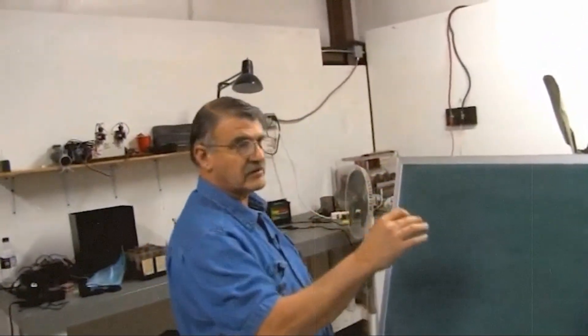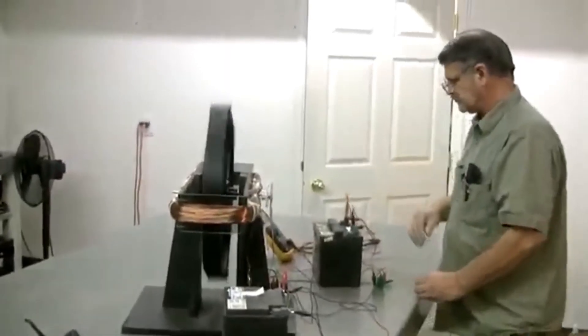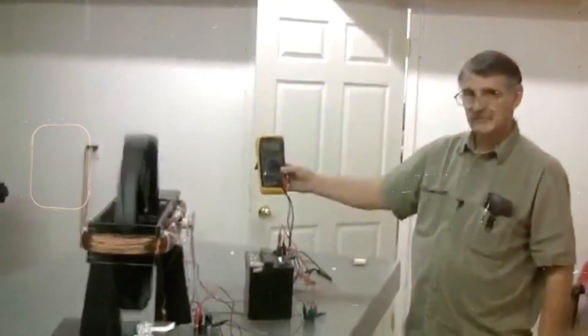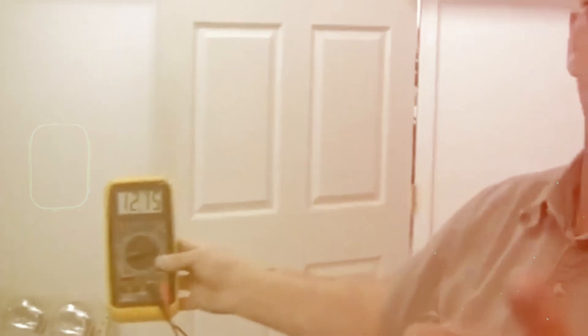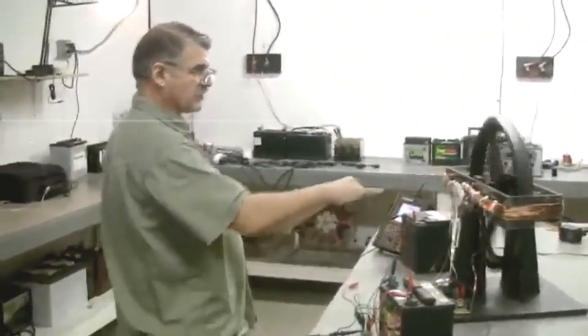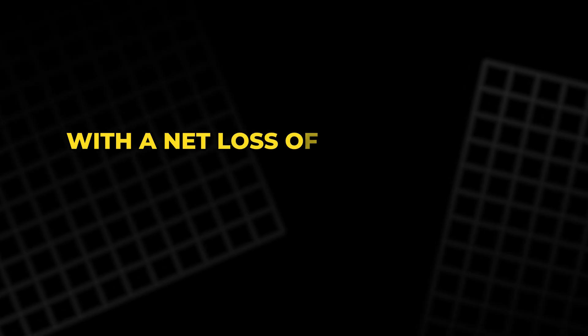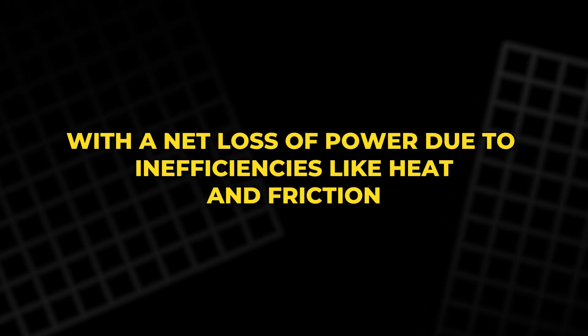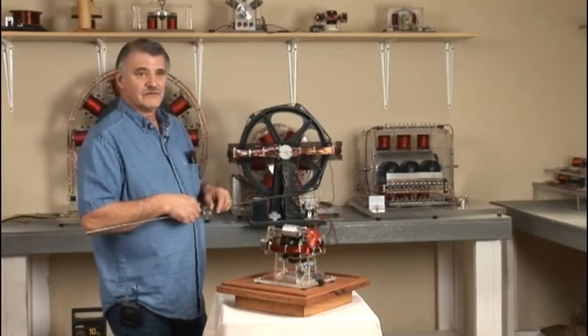However, this claim is highly dubious. The Bedini motor is actually a type of pulse motor, not a perpetual motion machine. It uses short bursts of current to move the rotor, but it still consumes energy from the battery. It does not generate excess energy. Rather, it transfers energy from one battery to another, with a net loss of power due to inefficiencies like heat and friction. Ultimately, the motor will stop working once the batteries are drained.